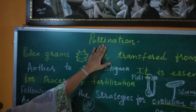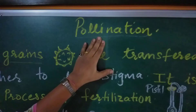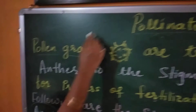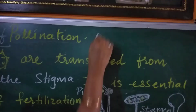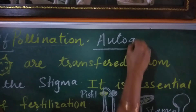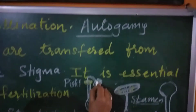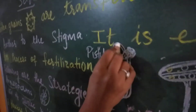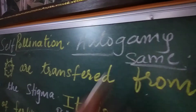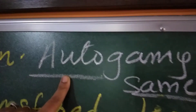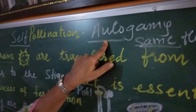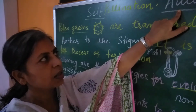There are three types of pollination on the basis of sources. The first is self-pollination, also termed autogamy. Auto means self. When pollen grains are transferred from the anther to the stigma of the same flower — same plant, same flower — we use the term self-pollination or autogamy. Here, inbreeding or self-pollination takes place.